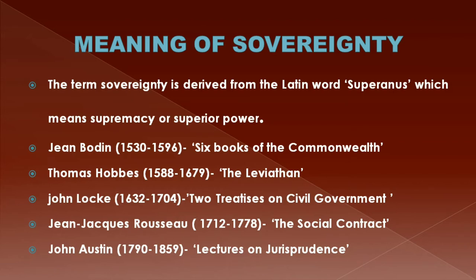Another exponent of sovereignty is Hobbes. Hobbes gave his theory of sovereignty in his famous book called the Leviathan. According to him, sovereignty was created by means of a social contract. The sovereign was not a party to the contract and there was no limitation on his authority, which was absolute.